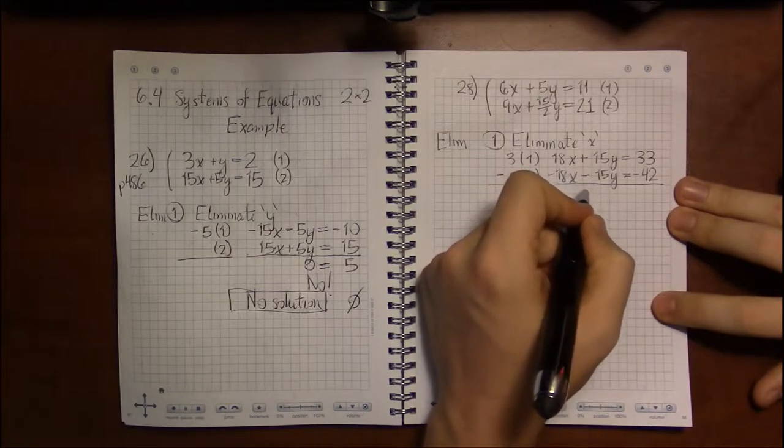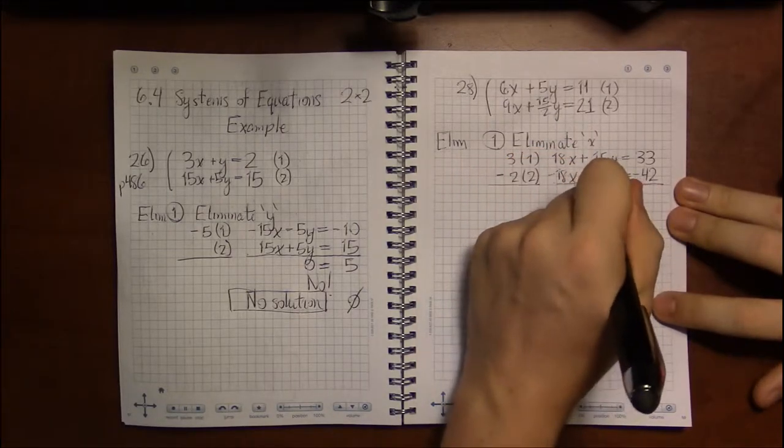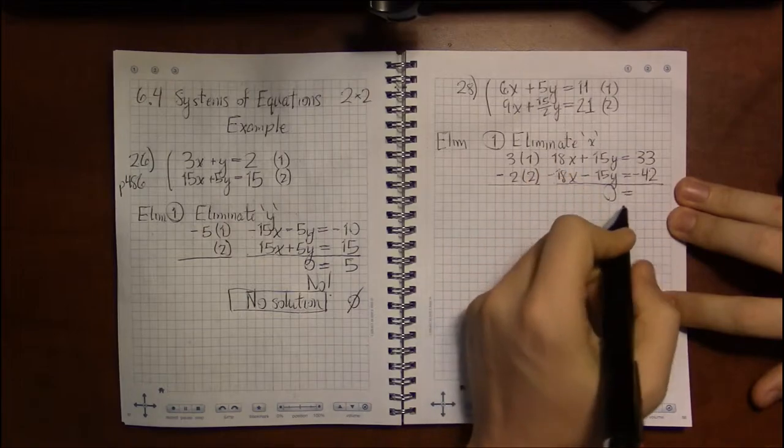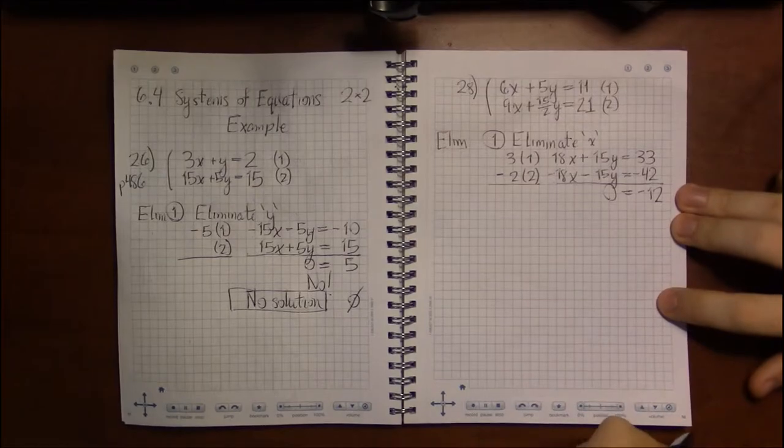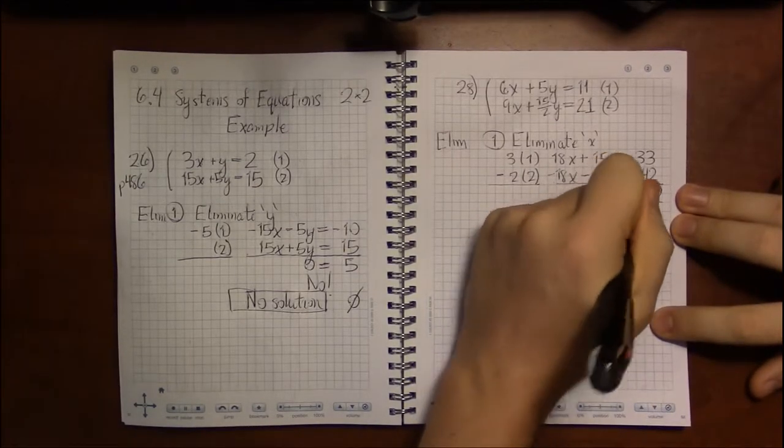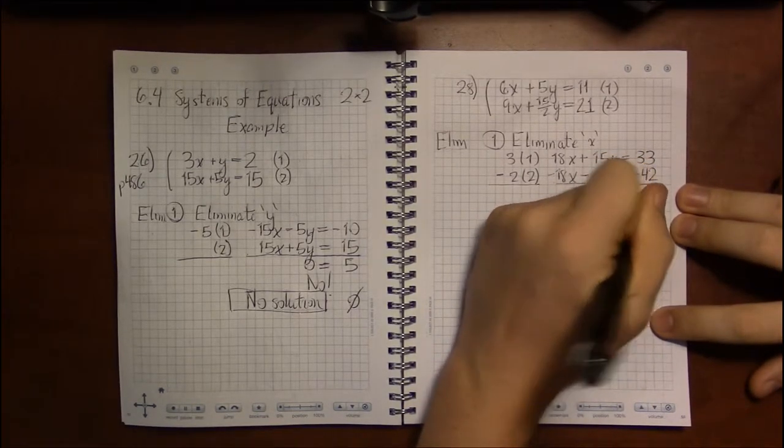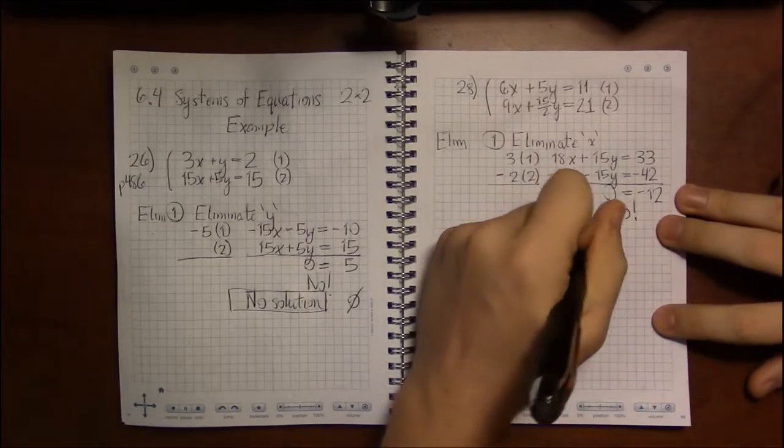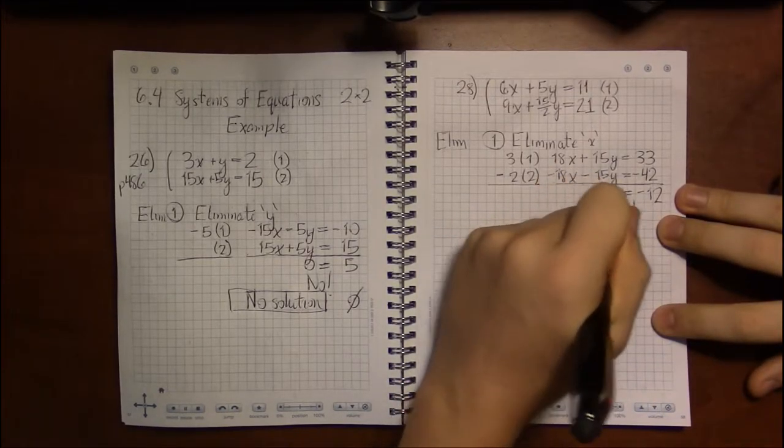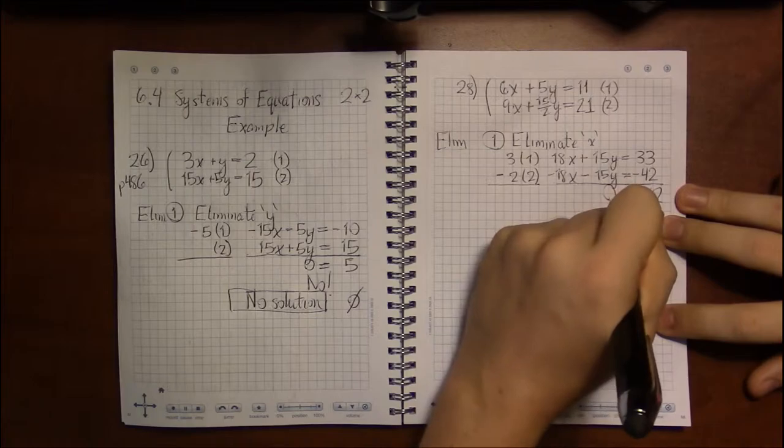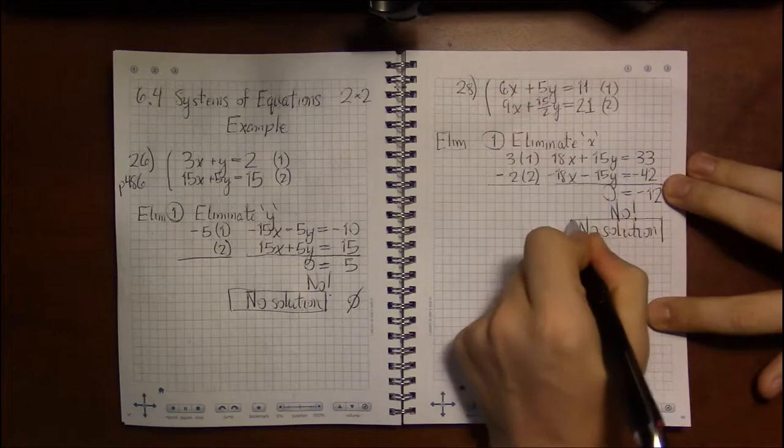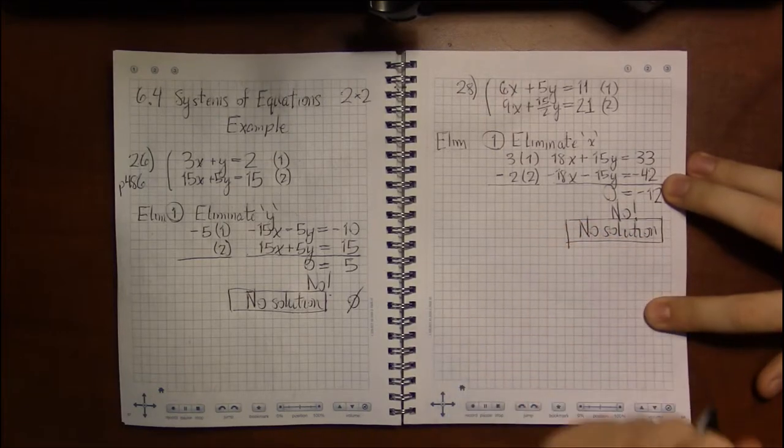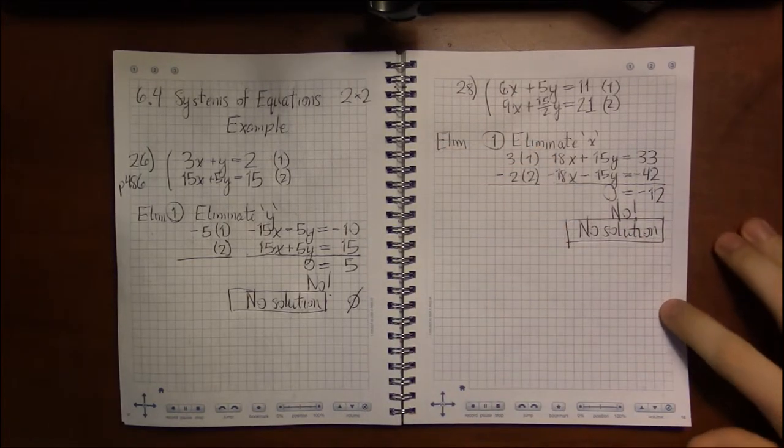Again, cancel cancel cancel. There's nothing left or zero left on the left. And on the right, we have something that isn't zero. And so we reach a clearly false statement, which means we have an inconsistent system. And an inconsistent system is a fancy way of saying, we've got no solution to this problem.